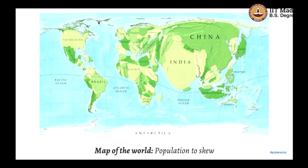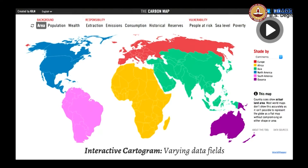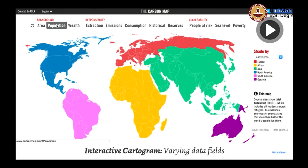So this is a map of the world where every country is sized according to its population. You can now clearly see India, China are really big, European nations become smaller, America is okay, Mexico stands out a bit more, and some of the other countries are becoming tinier. You could probably do this with an interactive piece.